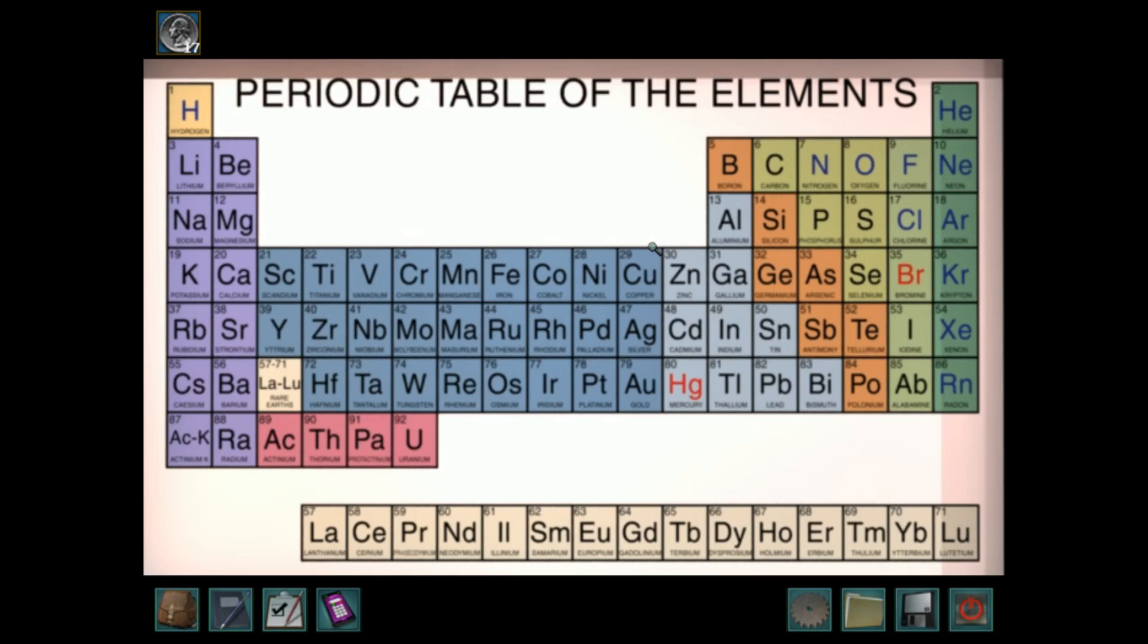C-A, do I have C-A? A bunch of other stuff, not that. S-C, do I have S-C? Hmm, no. What's after S-C? T-I, I don't have T-I. V, I don't think I have V. C-R, is C-R? No. M-N, I don't think so. F-E, do I have F-E? That's a popular one, do I have it? No. C-O, nope. N-I, what's N-I? No. C-U, nope. Z-N, I feel like I have Z-N. Yep. Okay, six.